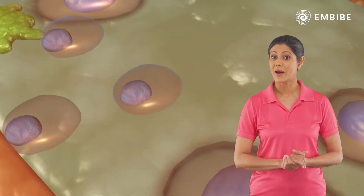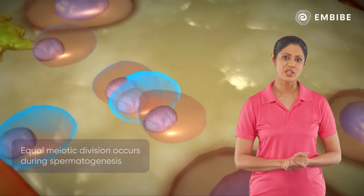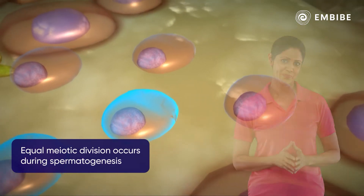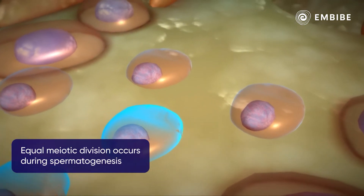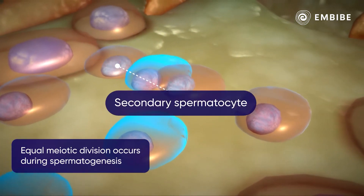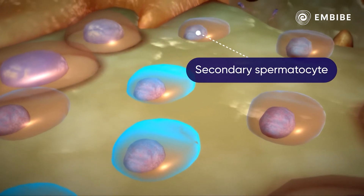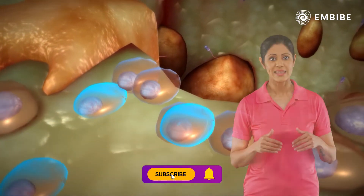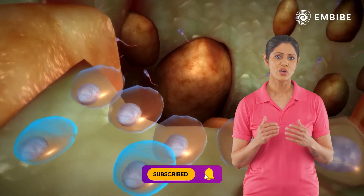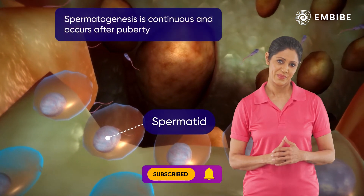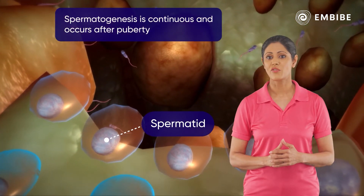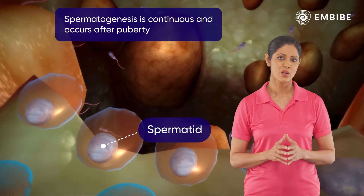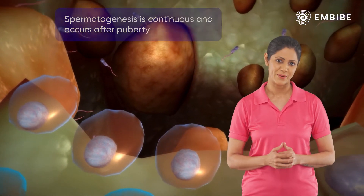In spermatogenesis, each meiotic division is equal. The first division gives rise to two equal secondary spermatocytes. The second meiotic division then gives four equal spermatids. The process of spermatogenesis is hence continuous, which occurs after puberty.